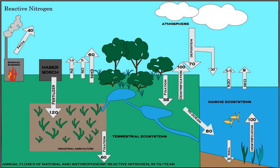A few non-legumes can also form such symbioses. Today, about 30% of the total fixed nitrogen is produced industrially using the Haber-Bosch process, which uses high temperatures and pressures to convert nitrogen gas and a hydrogen source into ammonia.